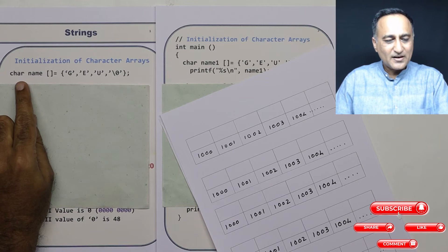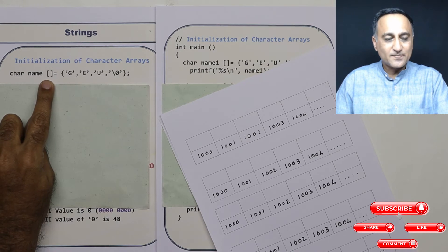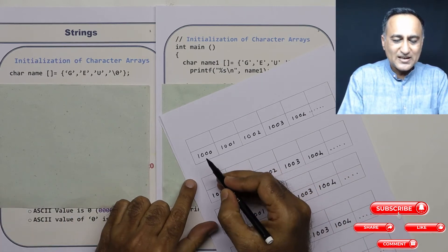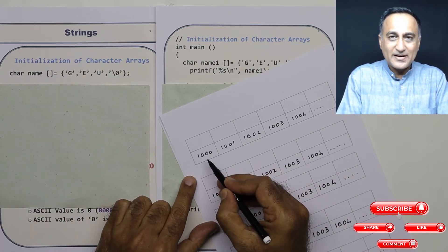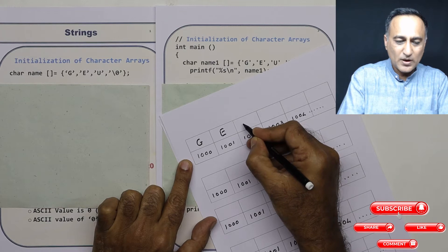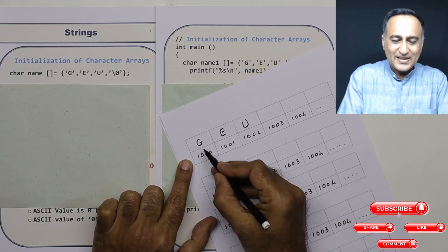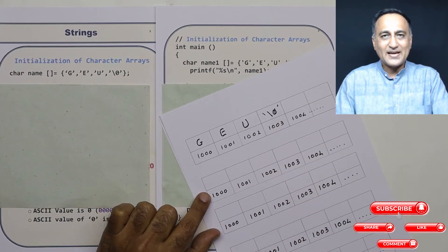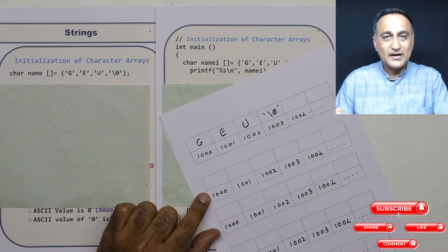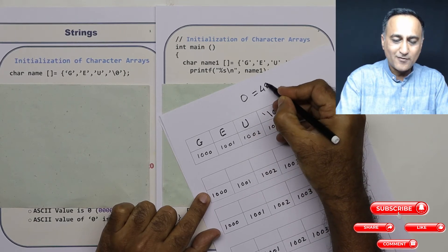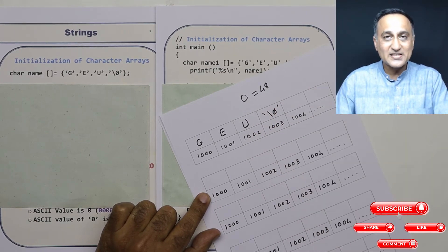Suppose I have declared a character array called 'name', but have not given it a length. I have initialized it with 'geu'. You can assume this array is located at address 1000 in memory, so 'g' will be at 1000, 'e' at 1001, 'u' at 1002. Then there is a special character called the null character. The ASCII value of this null character is 0 — not the character '0', which has an ASCII value of 48.